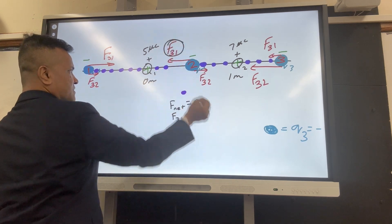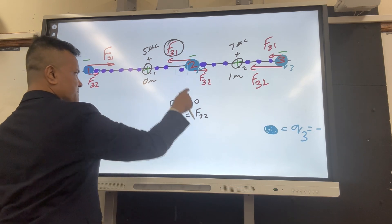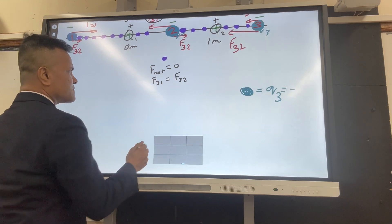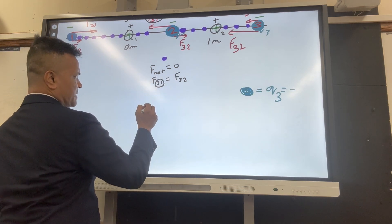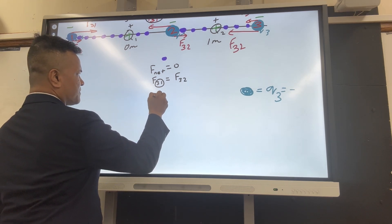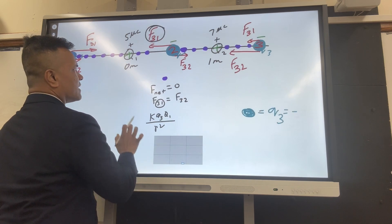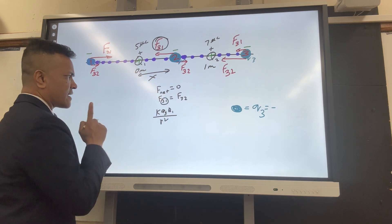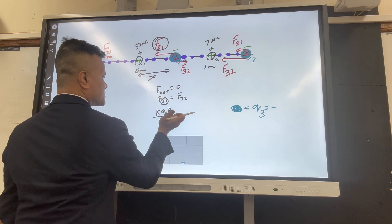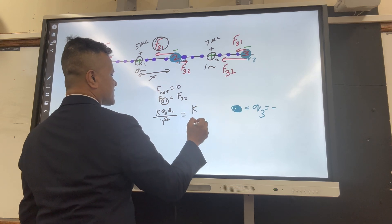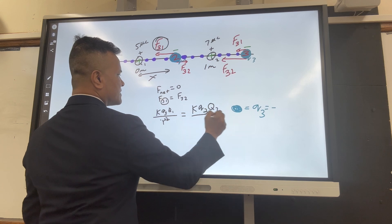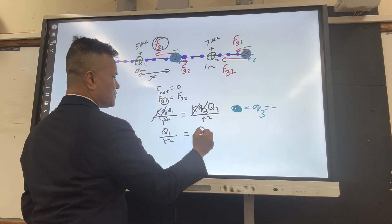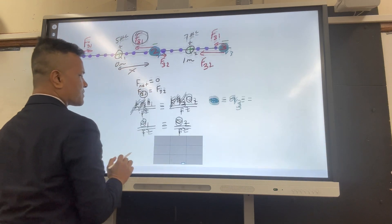F31 is bigger here. However, right here F31 is going to be equal to F32. There is exactly one point on this x-axis where F31 is equal to F32. That means we are going to write Coulomb's law: K·Q3·Q1 over R squared. If you put x at the point where F net is zero, you are going to replace R with x. So K·Q3·Q2 over R squared. K cancels, Q3 cancels. You're left with Q1 over R₁² is equal to Q2 over R₂². Don't cancel R squared because they are not the same thing.